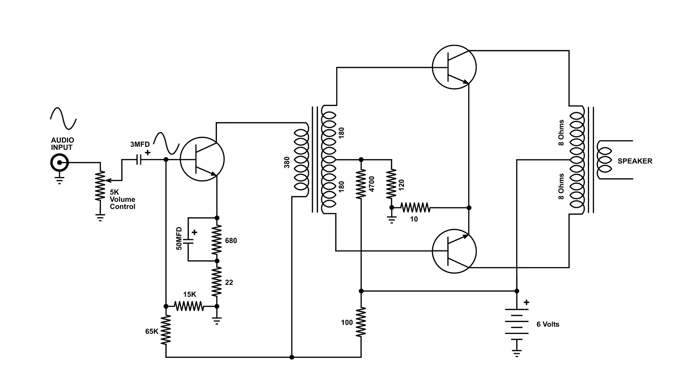This first transistor will amplify the signal to drive the primary of the transformer. But notice the phase of that amplified signal. It is 180 degrees out of phase from the signal that is applied to the base.